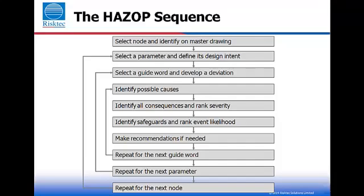The flowchart in this slide shows the process to be followed on a step-by-step basis. For each node, what is the design intent? What's supposed to happen here? Possible deviations from the design intent may occur — do we have more flow? No flow? Less flow? And so on.